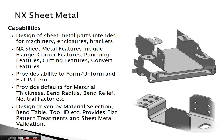You've also got defaults for material thickness, bend radius, and bend relief. You can figure out neutral factors, and the design is driven by material selection, which is key. Bend table, tool identification or ID, and then you can also provide flat pattern treatments for validation of your sheet metal.